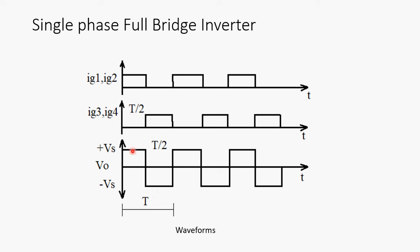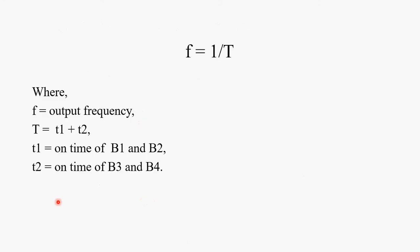We will say that for T by 2, B1, B2 on, we are getting positive half cycle. And for next T by 2, we are getting negative half cycle. If we add T by 2, T by 2, we get output as T. Simply, in simple words, we can write the formula. If the output frequency F can be calculated as 1 upon T.